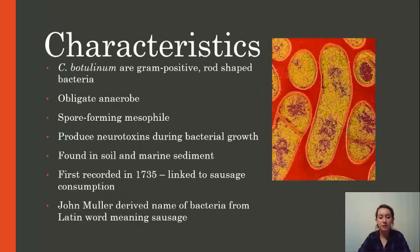Characteristics of this bacteria include gram-positive rod-shaped morphology. They thrive in low oxygen to no oxygen environments, and they form spores. They also fit into the mesophile range of bacteria. They produce neurotoxins as they grow, and this is one of the most defining characteristics of this bacterium.